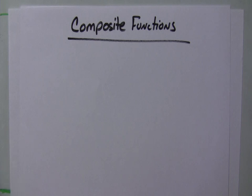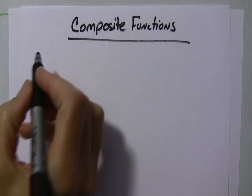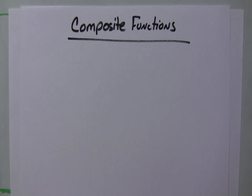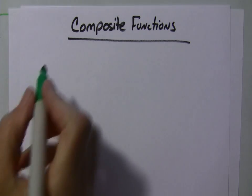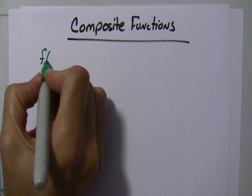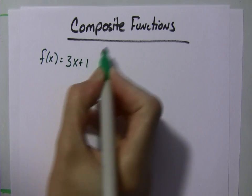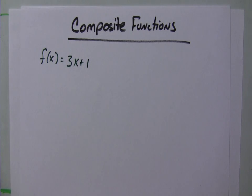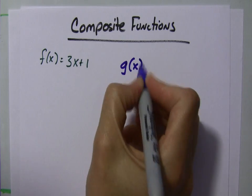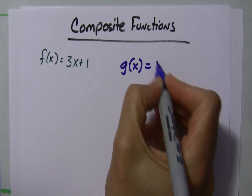Taking it one step further, and by the way, the domain of all of these functions will be over all real numbers. So, we don't have to worry about that here. Let's say that f of x equals 3x plus 1, and for g of x, we'll have x squared.